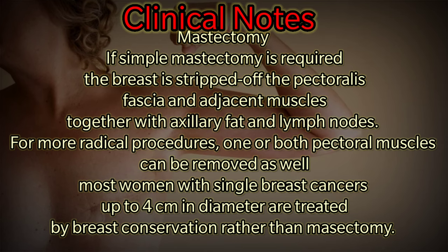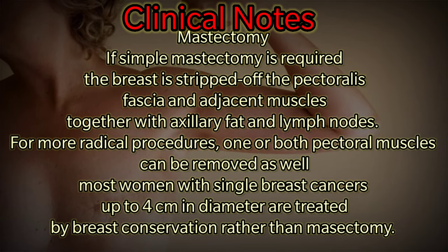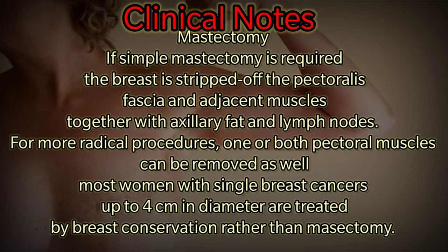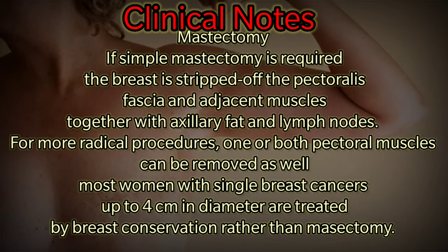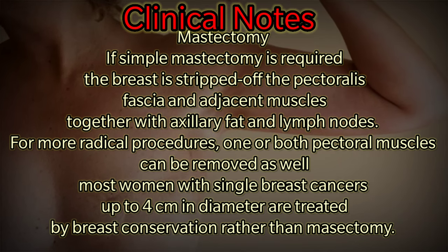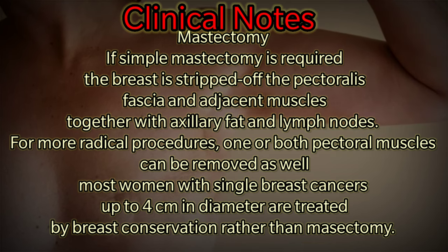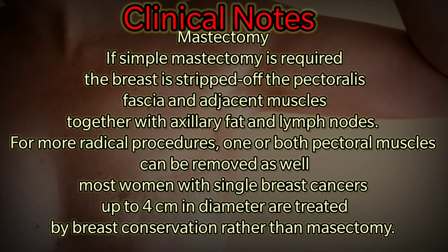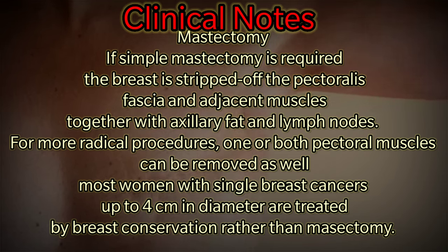Clinical notes — mastectomy: if a simple mastectomy is required, the breast is stripped of the pectoralis fascia and adjacent muscle, together with axillary fat and lymph nodes. For more radical procedures, one or both pectoral muscles can be removed as well. Most women with single breast cancers up to four centimeters in diameter are treated by breast conservation rather than mastectomy.